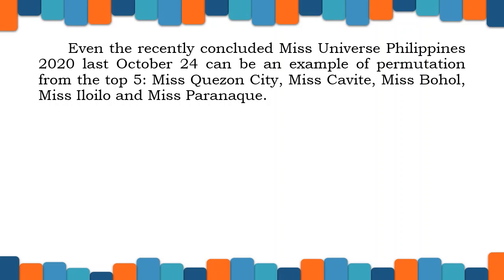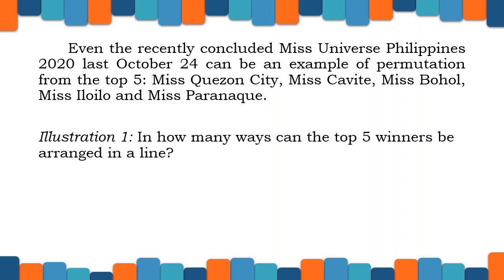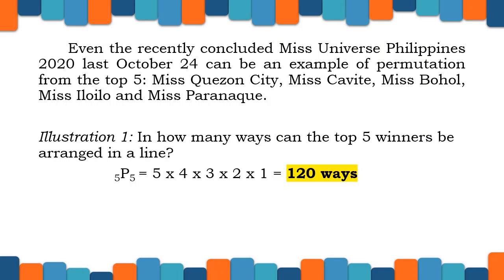Even the recently concluded Miss Universe Philippines 2020, last October 24, can be an example of permutation from the top 5: Miss Cagayan de Oro, Miss Cavite, Miss Bohol, Miss Iloilo, and Miss Parañaque. In illustration 1, in how many ways can the top 5 winners be arranged in a line? We have 5P5 equals 5 times 4 times 3 times 2 times 1, which is equal to 120 ways.